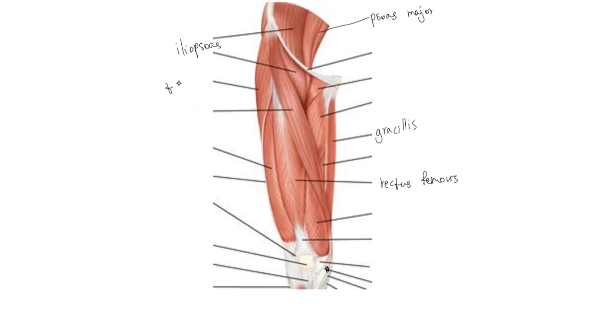Next we have this muscle called tensor fasciae latae. Tensor fasciae latae is a muscle that connects from the hip to the tibia. The connection part, the tendon that connects it, we can see right here - we call that the iliotibial tract. The iliotibial tract connects the tensor fasciae latae, and as the name suggests it will tense. Because it's an anterior muscle, it will lead to flexion at the hip.